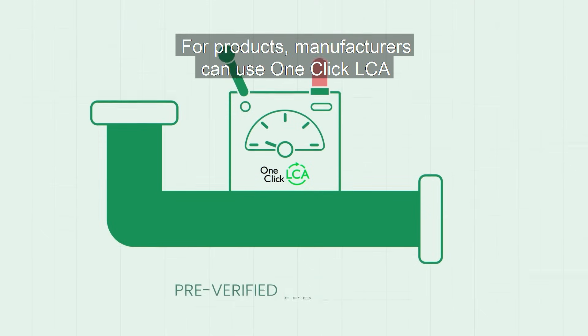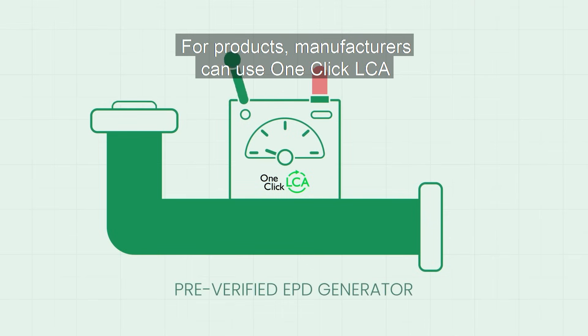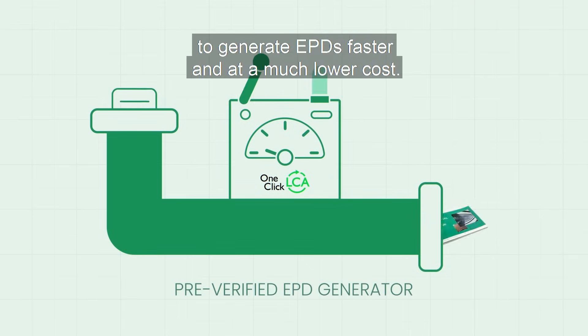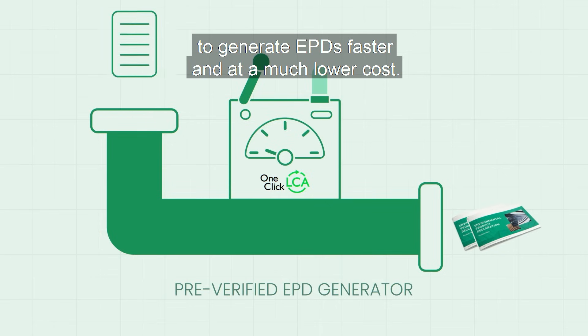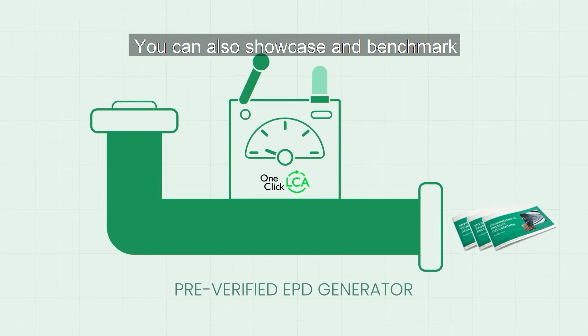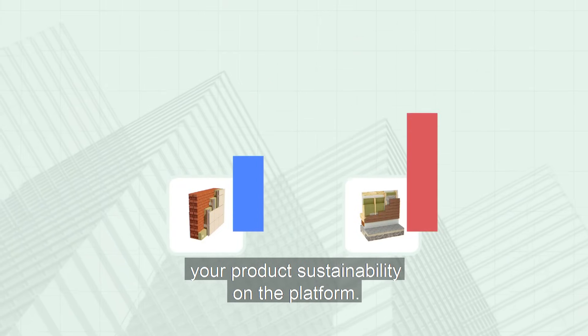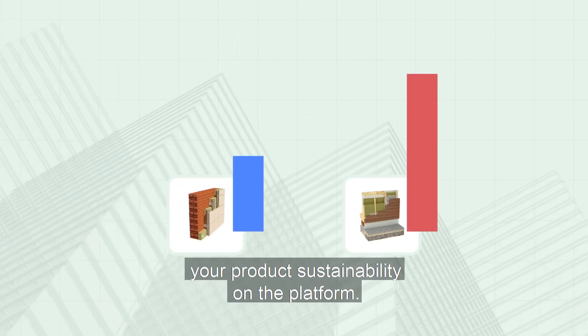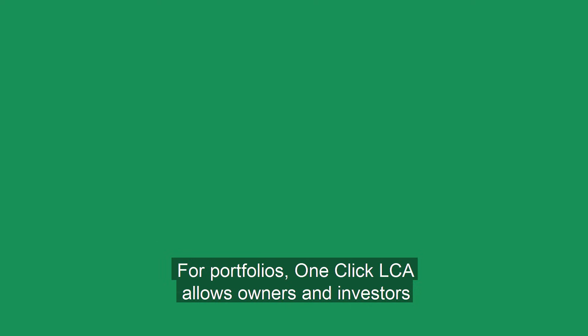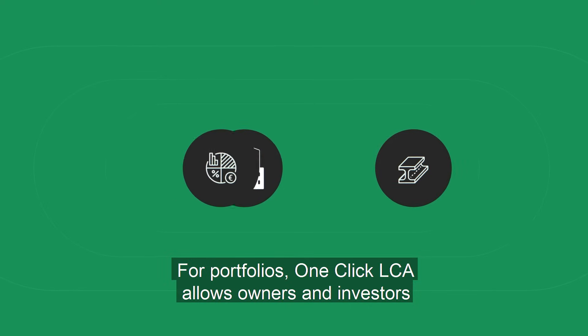For products, manufacturers can use OneClick LCA to generate EPDs faster and at a much lower cost. You can also showcase and benchmark your product sustainability on the platform.